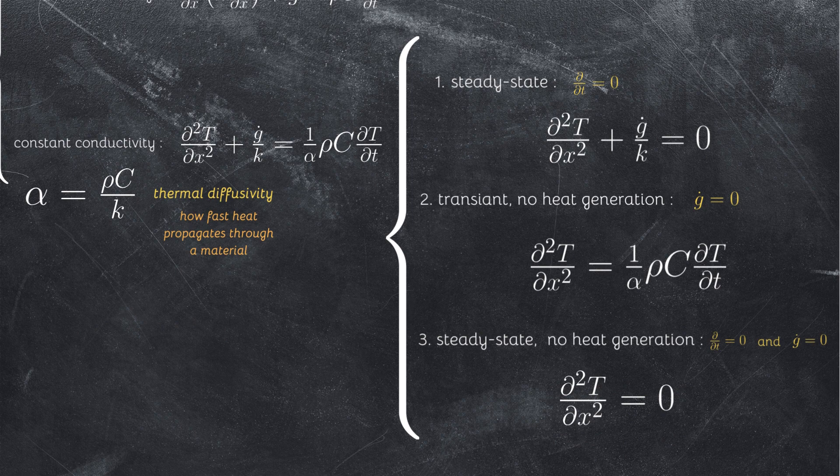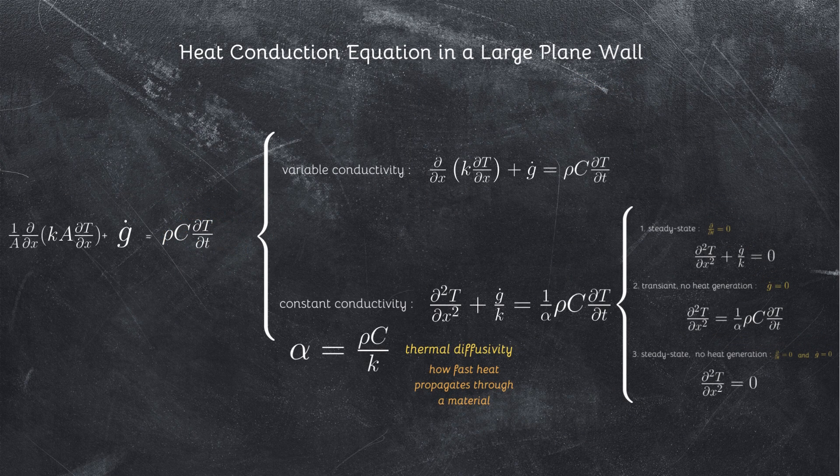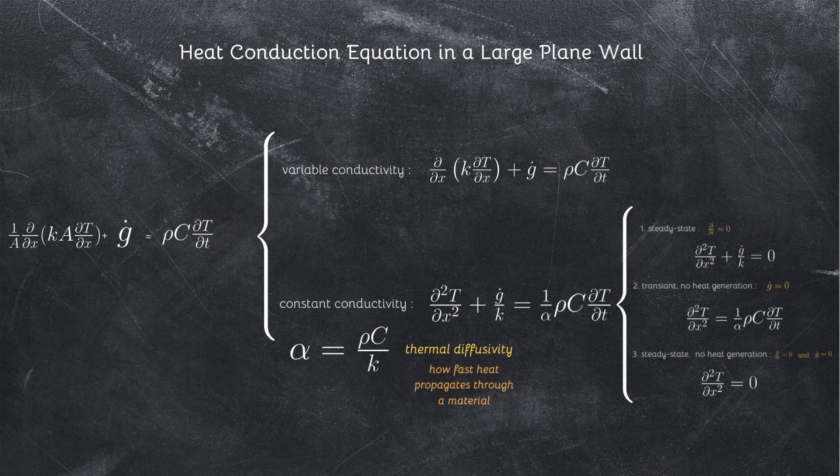It reduces to the following forms under specified conditions. And that's all about the heat conduction equation in a large plane wall.